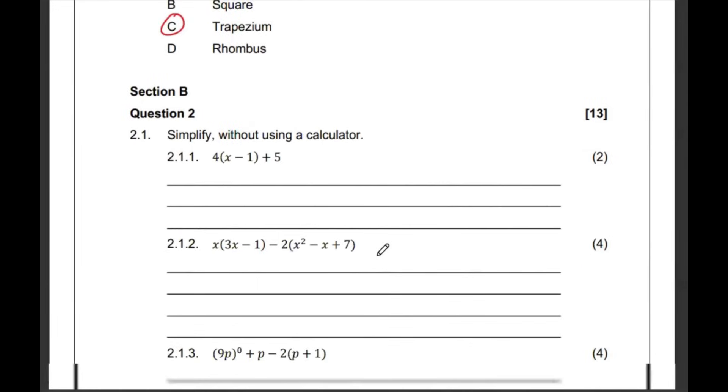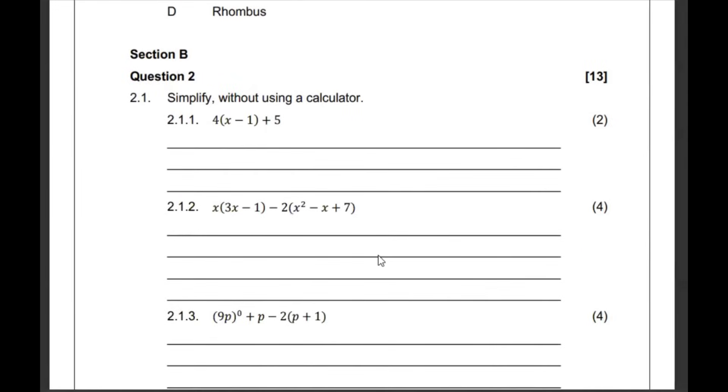Then 1.5, my quadrilateral with one pair of parallel sizes is called a trapezium. Section B, question 2. They want us to simplify without a calculator. Open the brackets and collect the like terms. It's going to be 4x. And then 4 and that is going to be minus 4 plus 5. That's 4x plus 1. We cannot add this together because these are not like terms.